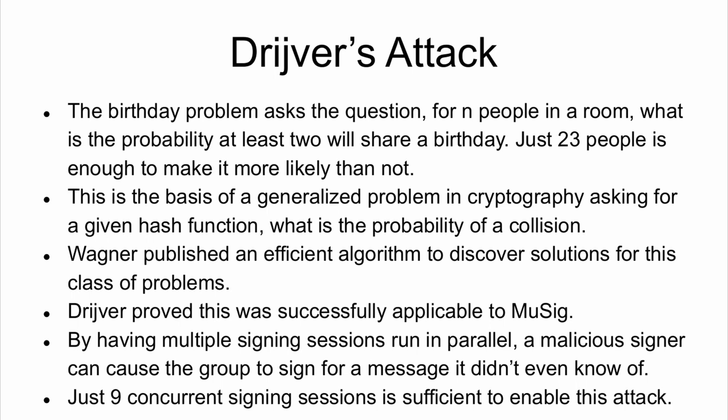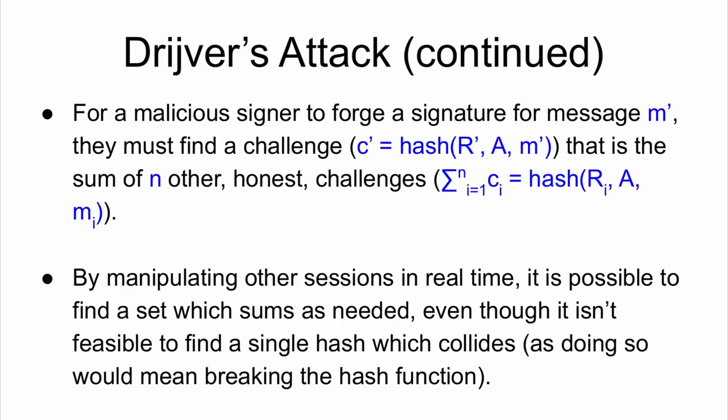Wagner — I believe in the 1970s — published an efficient algorithm to discover solutions for this class of problems. What Driver did is prove it was successfully applicable to MuSig. By having multiple signing sessions run in parallel, a malicious signer can cause the group to sign for a message it didn't even know of. Just nine concurrent signing sessions is sufficient to enable this attack. The math: you have a malicious message and you're looking for a challenge that is the sum of N other honest challenges. You can't touch the public key or the message, but you contribute part of the nonce. Even the slightest change is enough to calculate a new hash, and you start looking for a series of nine different hashes which add as you need them to.